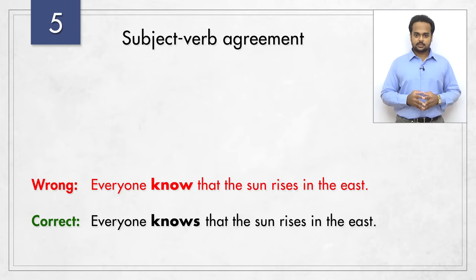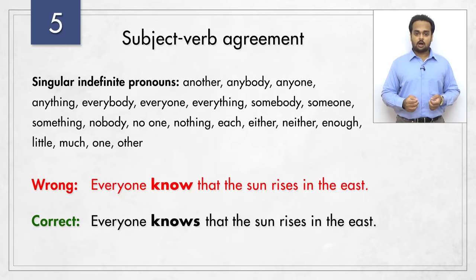This is because everyone is actually a singular subject. You might be thinking – 'everyone refers to all the people, so it's a plural.' But it's not. In English grammar, the pronouns that you see on the screen are all singular. They are not plural – keep that in mind.